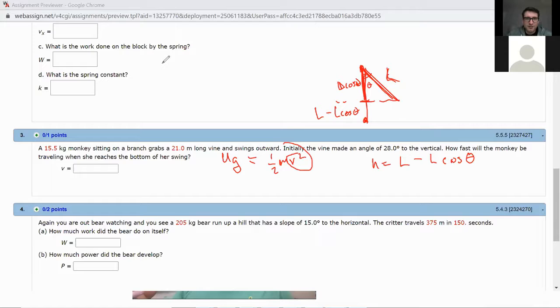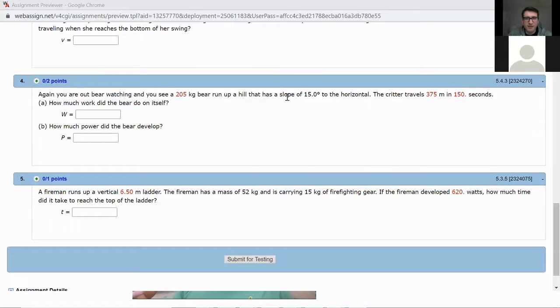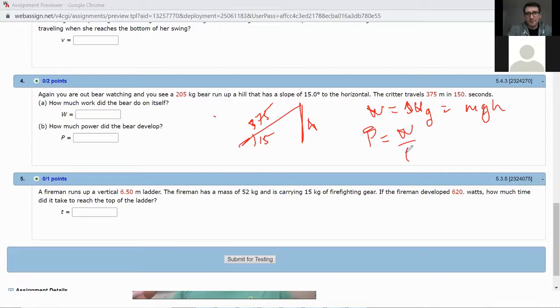And then these ones are actually not terribly difficult. They're just using the new power equation. You see a bear that runs up a hill. The critter travels this many meters in that many seconds. How much work did the bear do on itself? Well, it just changed its gravitational energy. So all you need to do is find the height. You know that this is 375, you know that angle is 15 degrees, so find the height. Once you have the height to figure out the work, work is just equal to the change in gravitational energy, which is equal to MGH. Once you've got that, the power is really easy. You just take the work and divide by the time, which is 150 seconds.